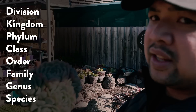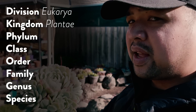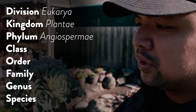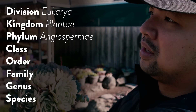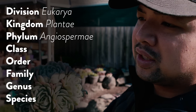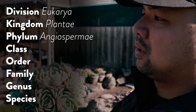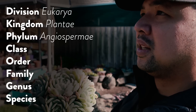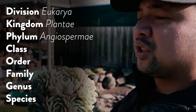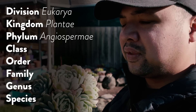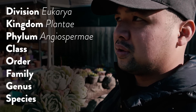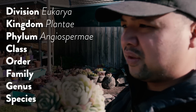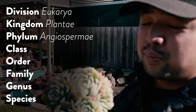So this Echeveria elegans has a division of Eucaria, kingdom of Plantae or plants, and phylum of Angiospermia. Angiosperms means that the seeds are contained in flowers rather than just being exposed. Gymnosperm means that the seeds are exposed — an example of that would be conifers, ginkgos, stuff like that. So they do not technically have flowers; they just have the seeds exposed.